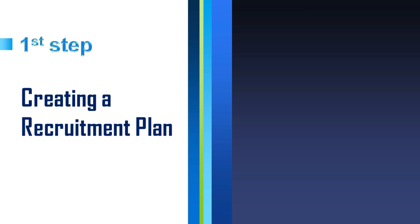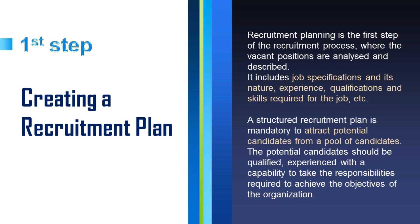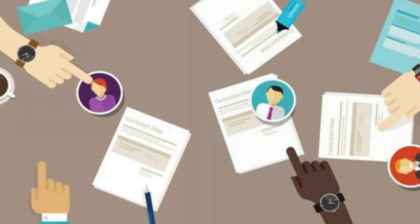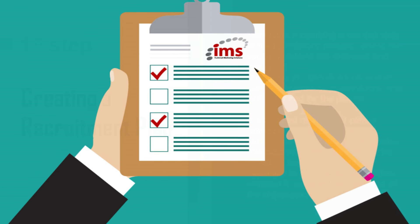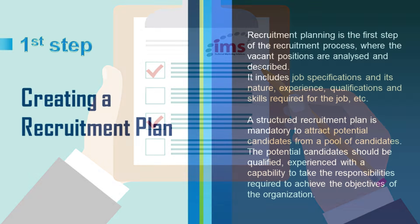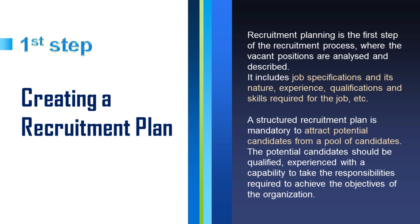Step one: creating a recruitment plan. The first step involved in the recruitment process is planning. Planning involves drafting a comprehensive job specification for the vacant position, where we outline its major and minor responsibilities, skills which that position requires, experience and qualification needed, grade and level of pay given to that employee, when the starting date should be, and whether that position is temporary or permanent. All these details are planned and noted down.